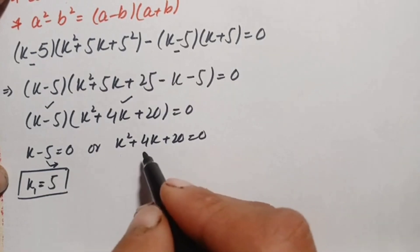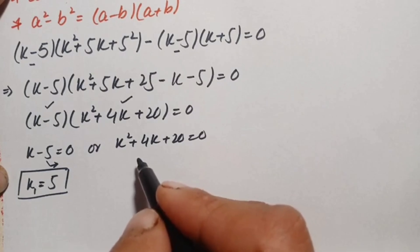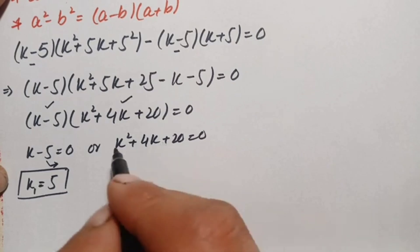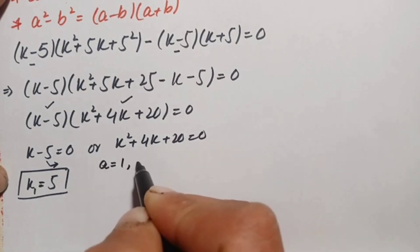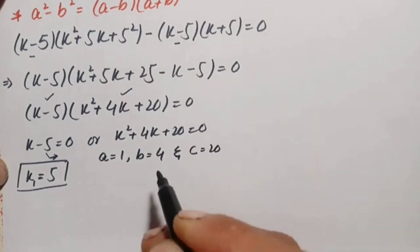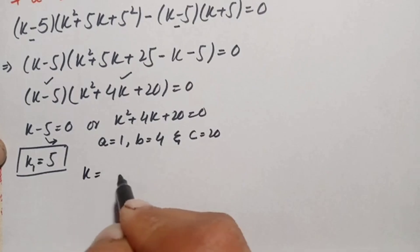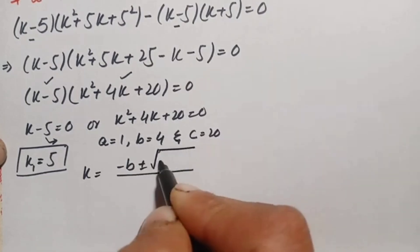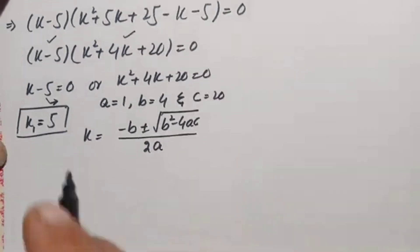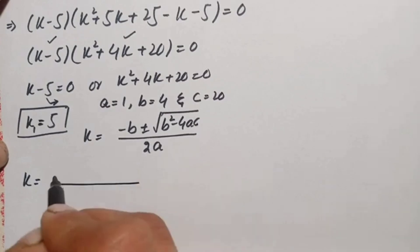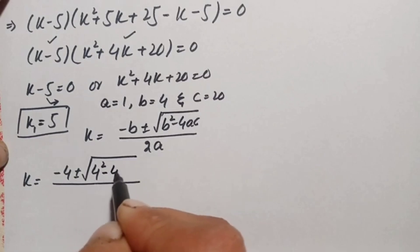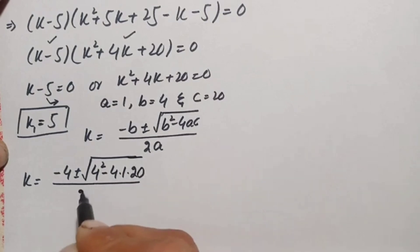We cannot factor the quadratic k squared plus 4k plus 20 by factorization or completing the square, so we use the quadratic formula. The coefficients are: a equals 1, b equals 4, and c equals 20. The quadratic formula gives k equals negative b plus or minus the square root of b squared minus 4ac, all divided by 2a.